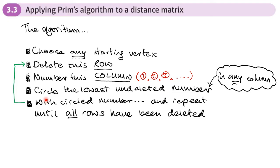We look at all the vertices and find the lowest weighted edge from any vertex. So we find the lowest undeleted number in any column. With the circled number we repeat these steps: delete that row, number the next column, circle the lowest number in any of those columns. We continue until all rows have been deleted. The circled numbers let us construct the minimum spanning tree.